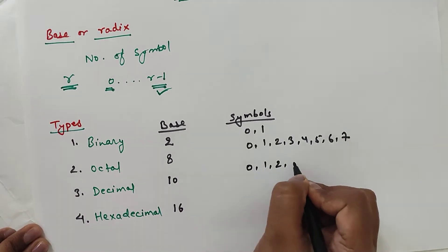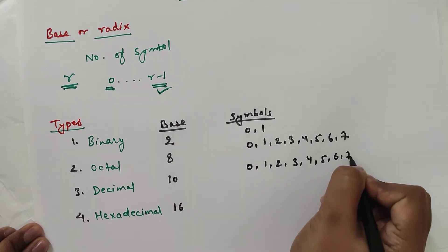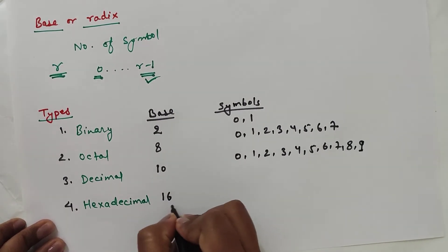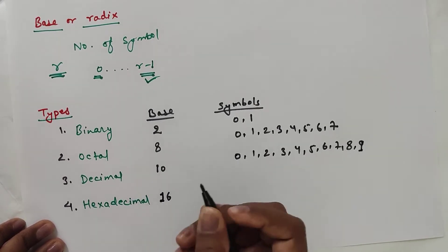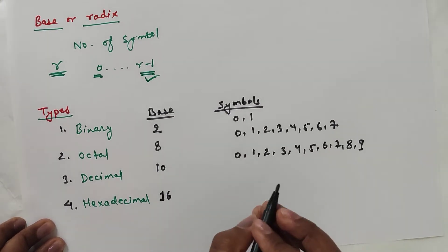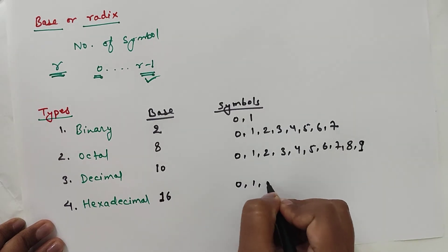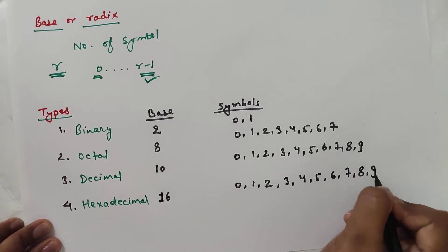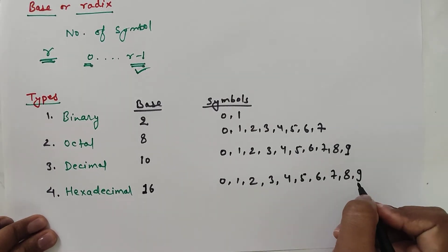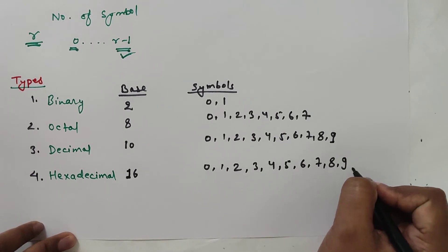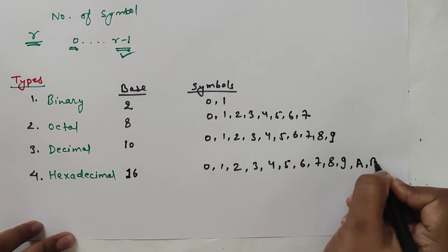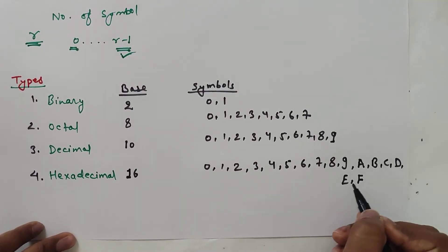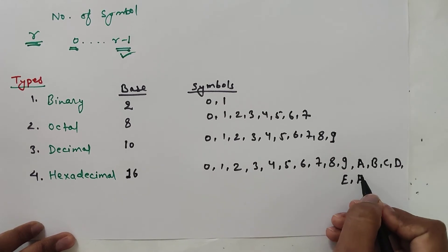For hexadecimal, the total number of symbols is 16, going from 0 to 15. We use 0 through 9, and since we only have these digit characters, we use additional alphabets A, B, C, D, E, and F to represent 10, 11, 12, 13, 14, and 15 respectively. So 15 is represented as F in hexadecimal.